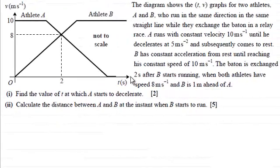Hi. In this question, we're given that the diagram shows the velocity-time graphs for two athletes, A and B,